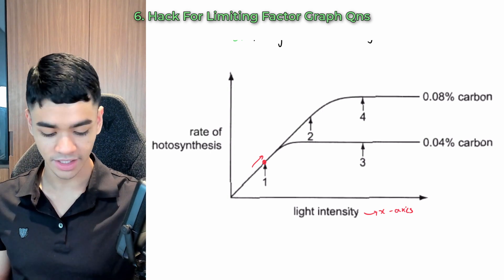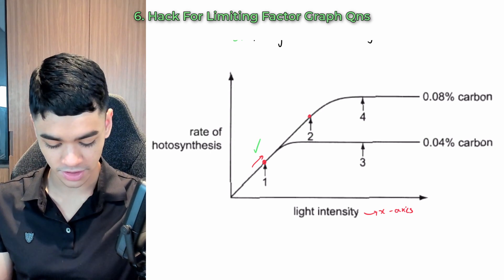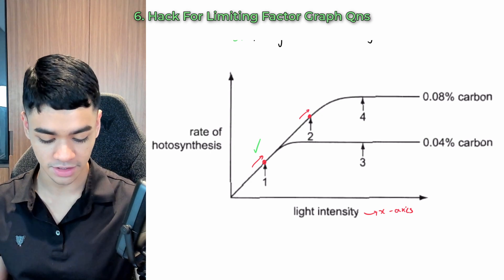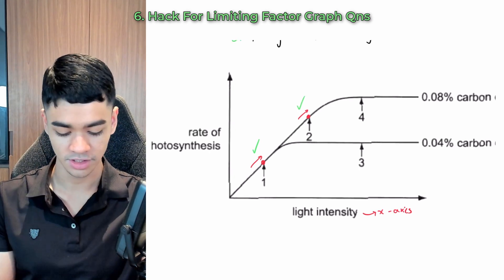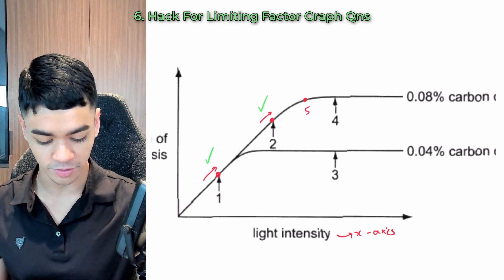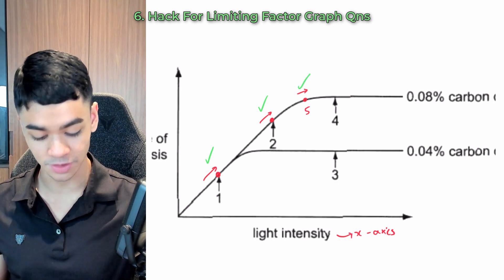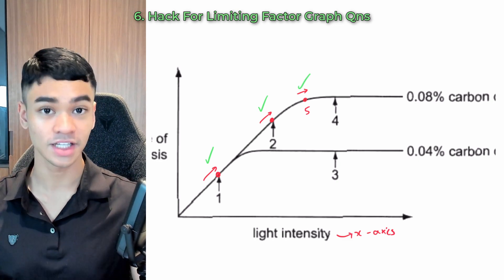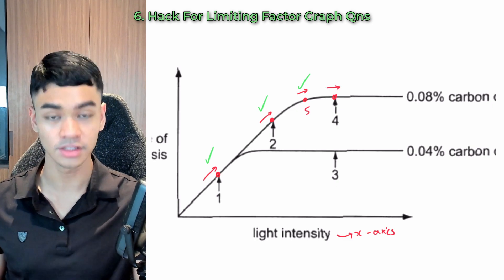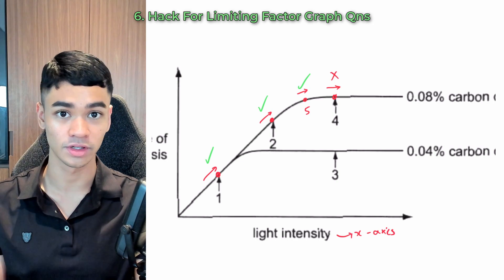That means at point 1, light intensity is limiting. So we can do this for 0.2 also. Is the gradient positive? Is it going up? Yes, right? So light intensity is also limiting at 2. What if I go really close to this part and I call it 0.5? Well, there's still a slight upward slope, right? So yes, light intensity is also limiting at 0.5. But once I get to the plateau part, like 0.4, and there is no more gradient, it is a straight line, then light intensity is no longer limiting.